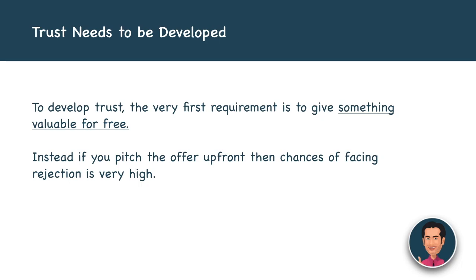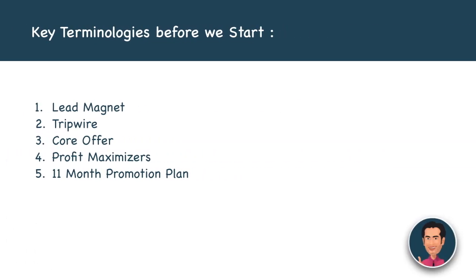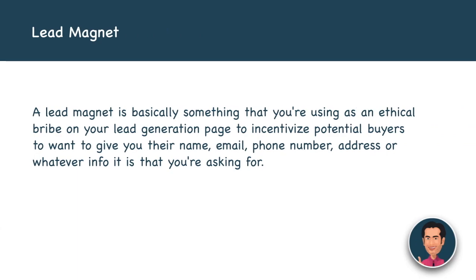Before we talk about a good sales funnel, I want you to know some key terminologies. The first is a lead magnet, the second is tripwire, the third is core offer, the fourth is profit maximizers, and the fifth is customer lifetime value — which also translates into an 11-month promotional plan. I'm going to walk you through each one of them.